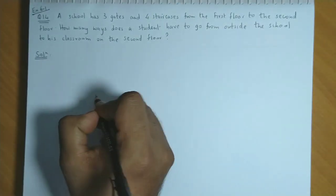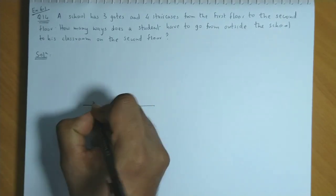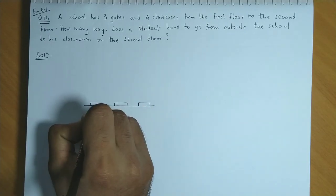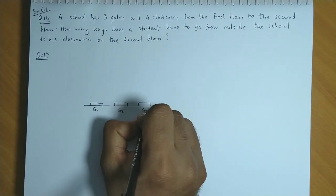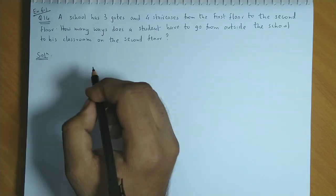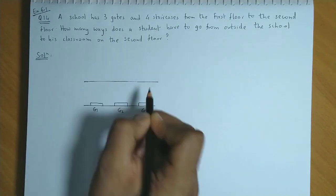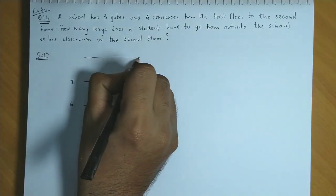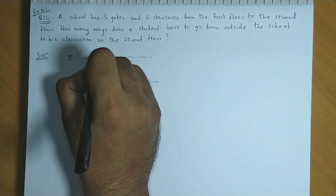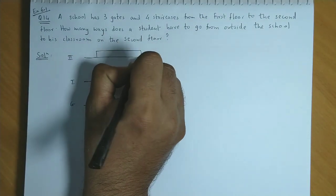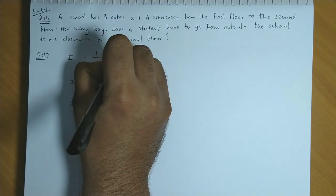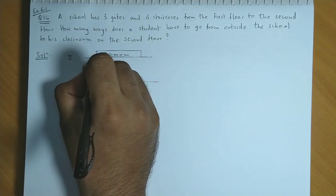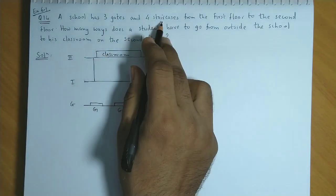First the student has to select a gate. There are three gates to the school. So suppose we name the gates as gate 1, gate 2, gate 3. And maybe these gates directly open to the first floor. This is your ground level, this is the first level. And here we have the second floor. The student has to reach the classroom on the second floor. Connecting the first and second floor, there are four staircases.